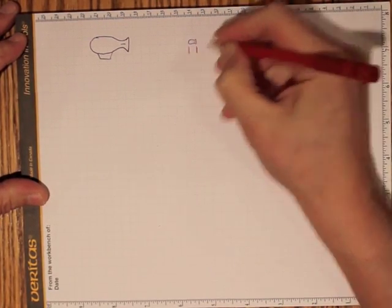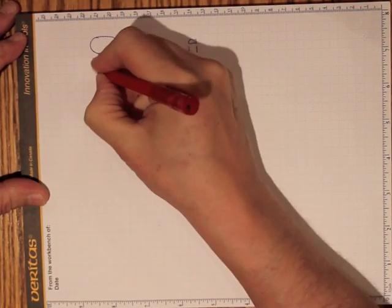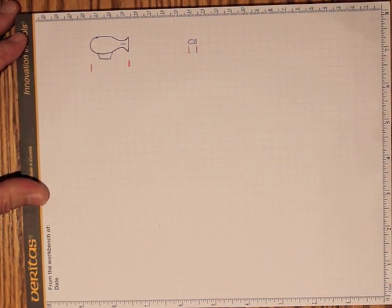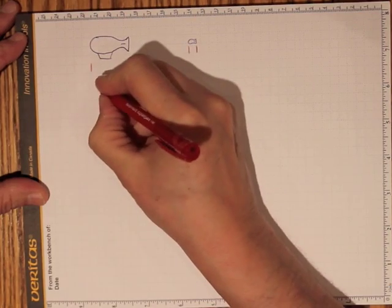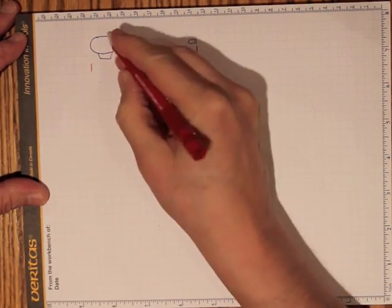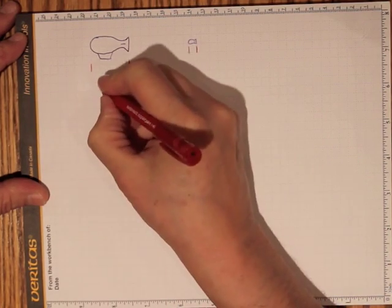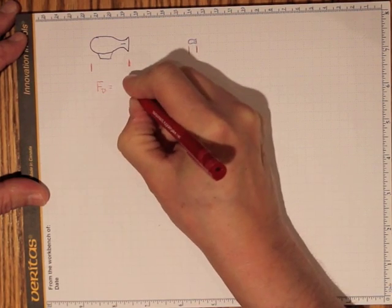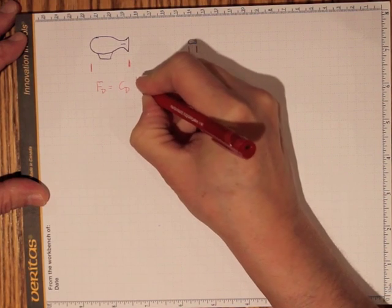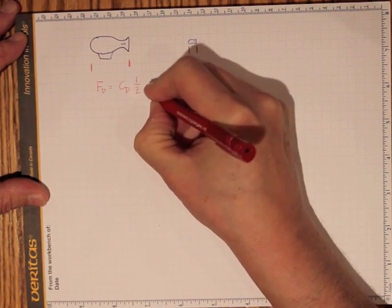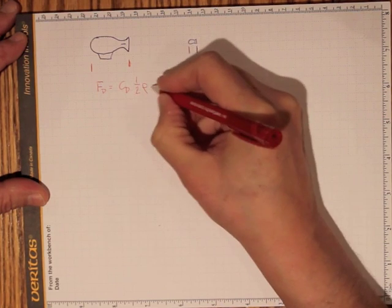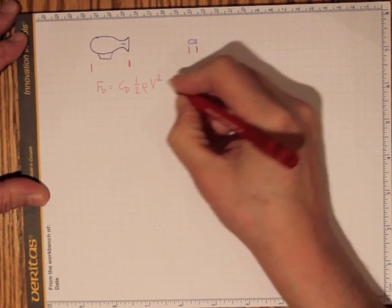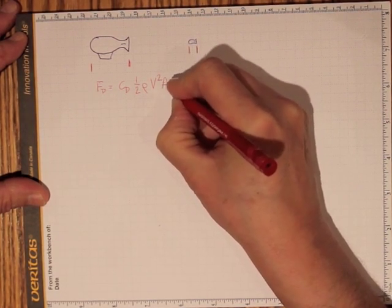Much smaller length, and that's a much smaller cross-sectional area for instance. If we're looking at the drag on that blimp, then the drag force will be the drag coefficient times one-half times the density of the fluid times the velocity of travel squared times the projected area.